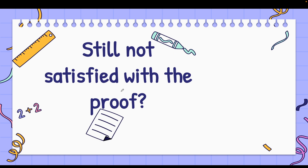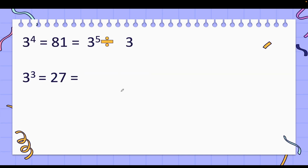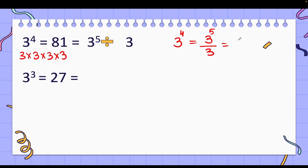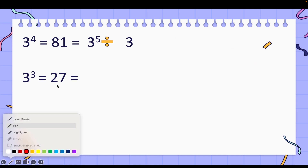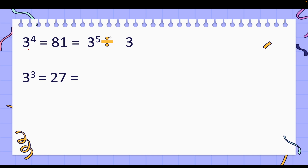I know you are still not satisfied with that proof — you want to know more. So here is another proof. Please concentrate carefully. 3 to the power 4 is 81, calculated as 3 × 3 × 3 × 3. Now, I can also write 3 to the power 4 as 3 to the power 5 divided by 3. Because 3⁵ is 3 × 3 × 3 × 3 × 3, divided by 3 — cancelling one 3 leaves us with 3 × 3 × 3 × 3, which is 3 to the power 4. So writing 3⁴ as 3⁵ ÷ 3 does not change the value.